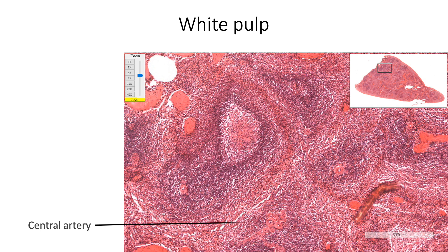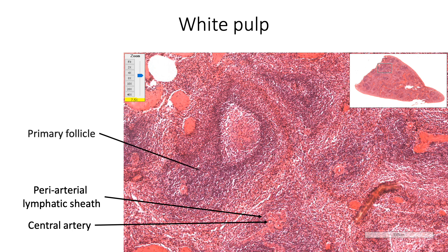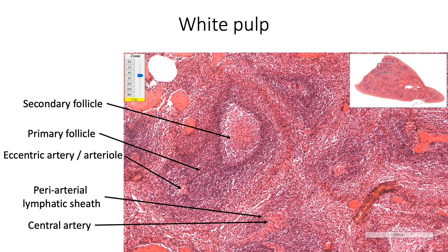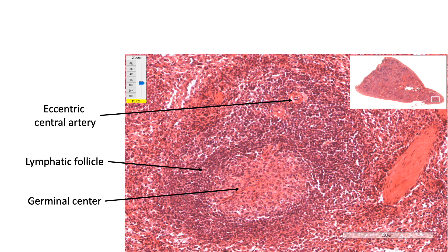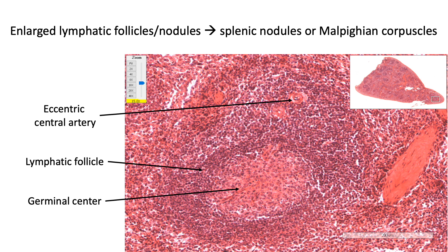White pulp is made up of the central artery whose tunica adventitia is replaced by the periarterial lymphatic sheath, which is predominantly made up of T lymphocytes. When the B lymphocytes in the white pulp proliferate to form either a primary or a secondary follicle, the central artery acquires an eccentric position. Here we are seeing the lymphatic follicle with the germinal center and an eccentrically positioned central artery. These enlarged lymphatic follicles or nodules are called splenic nodules or Malpighian corpuscles, not to be confused with the Malpighian corpuscles of the renal cortex.